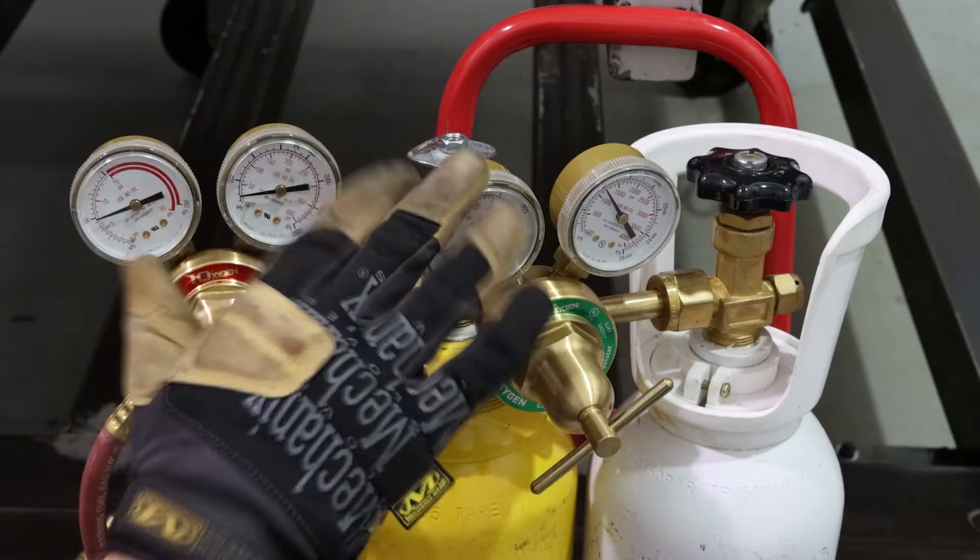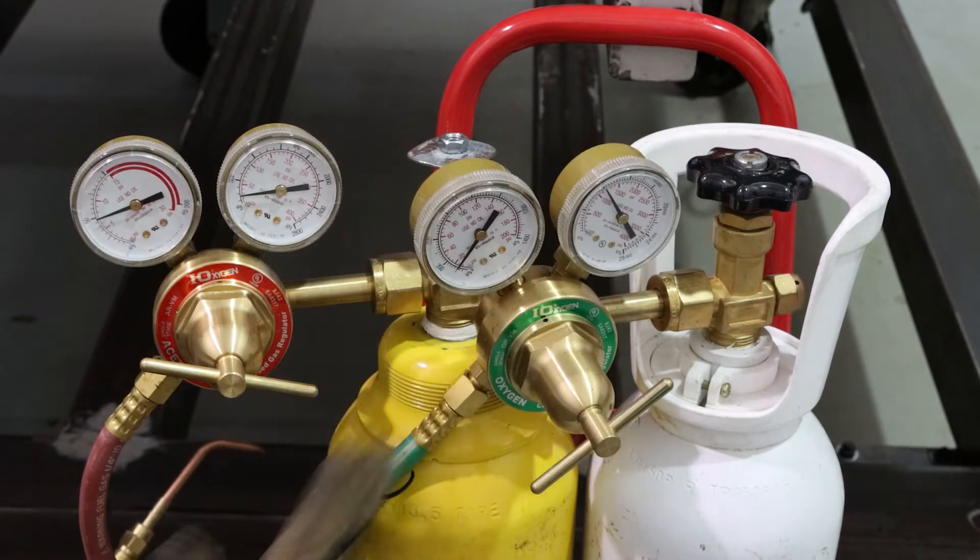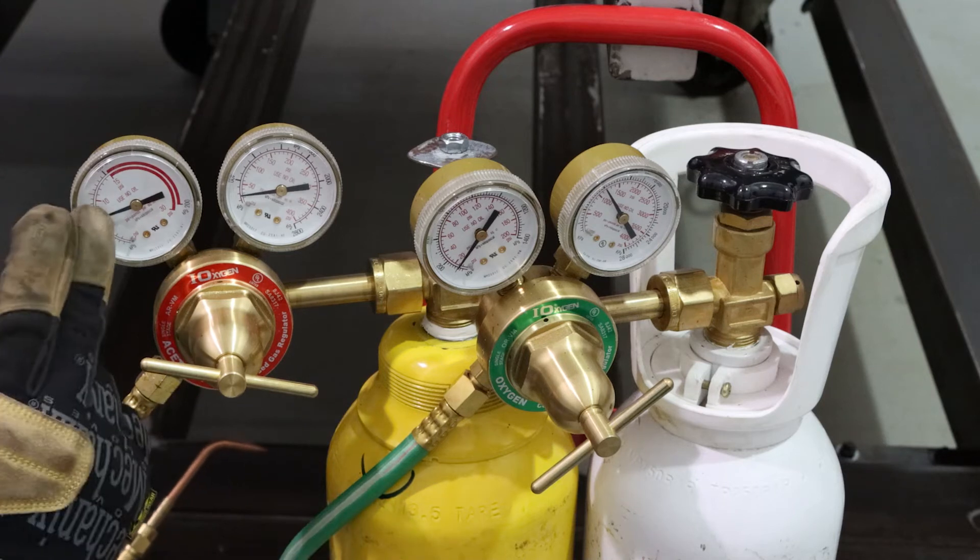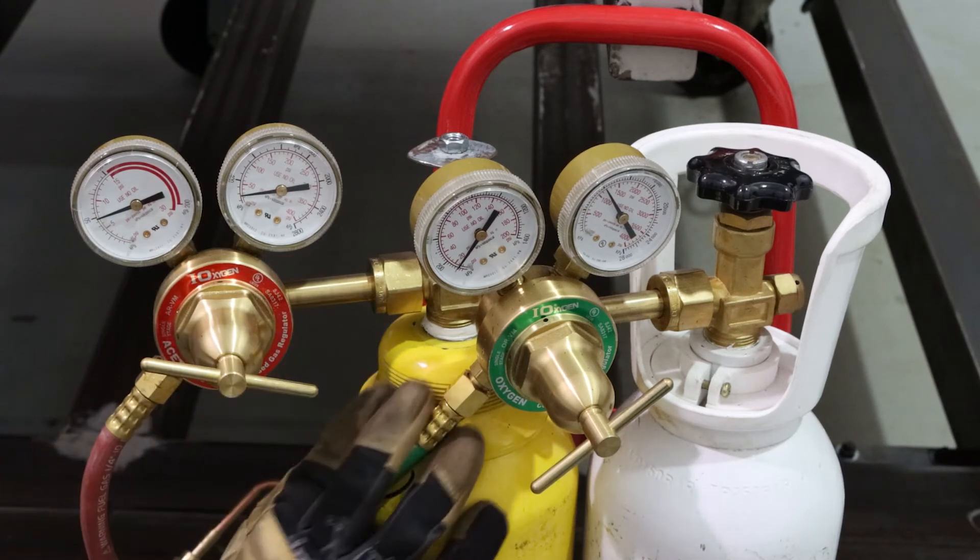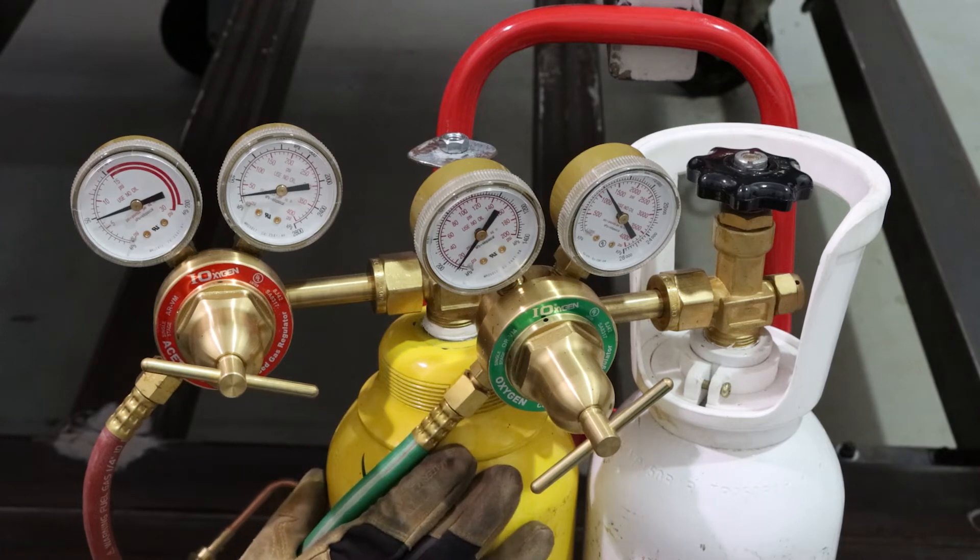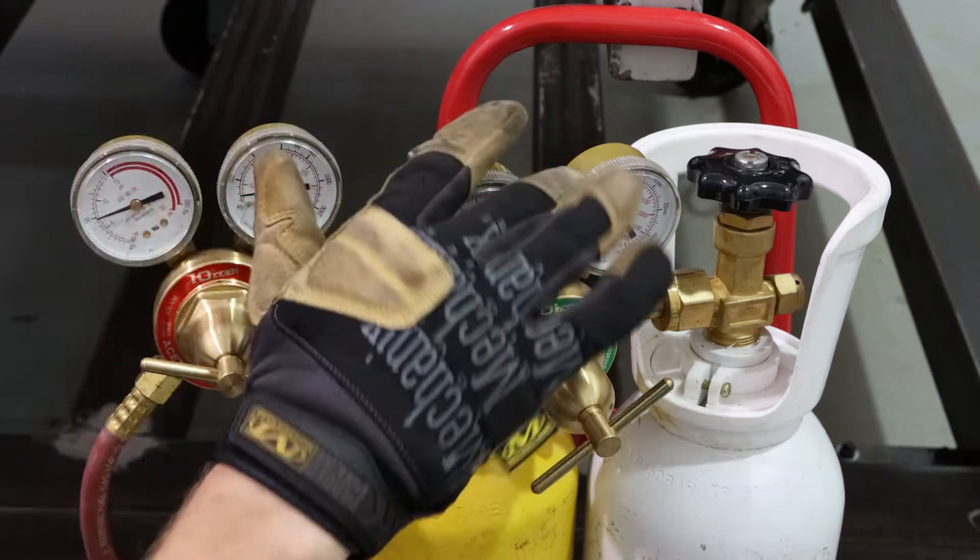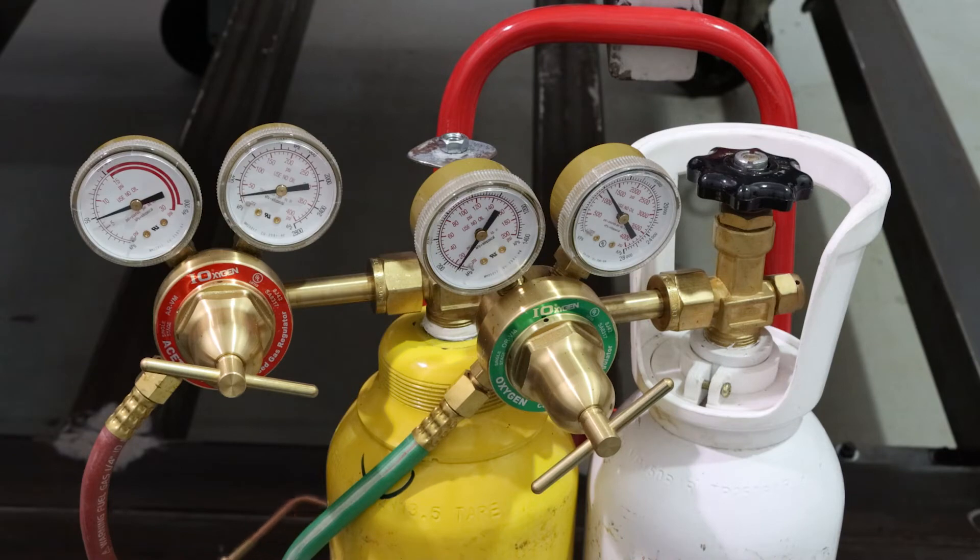So now we know as we're running this, oxygen on the line is about 10 psi and the acetylene on the line is about 5 psi. That's a general rule of thumb. You might find a bit different other places, but roughly oxygen double the line pressure of the acetylene.